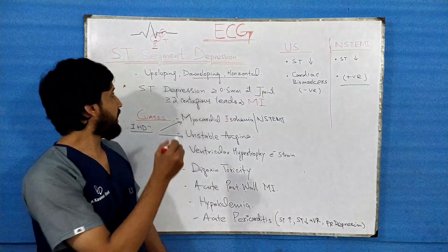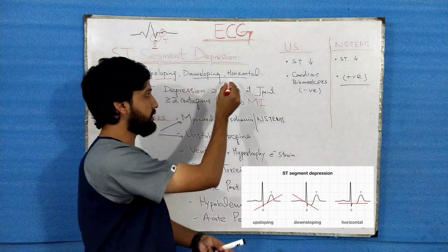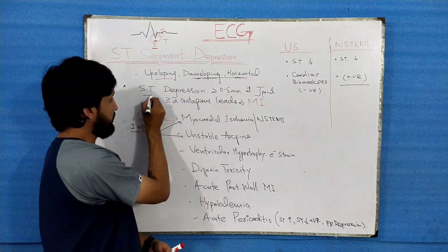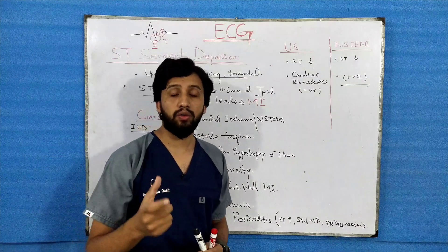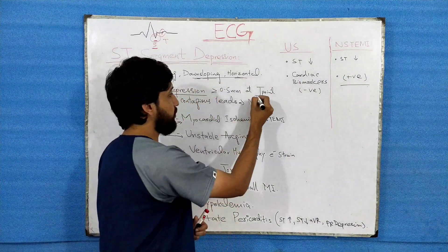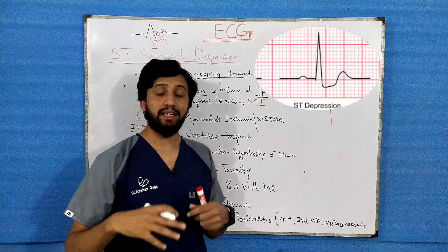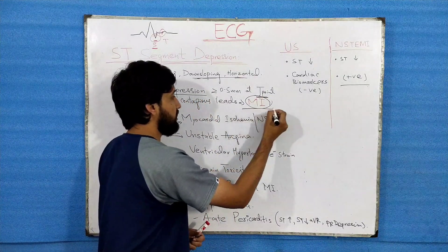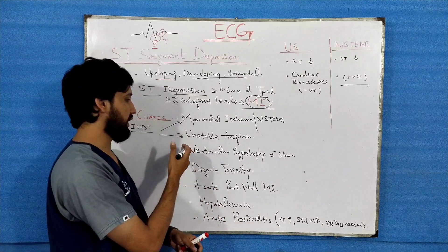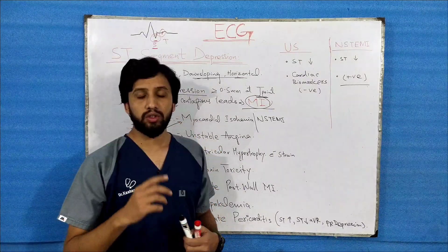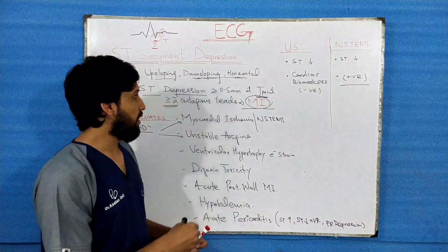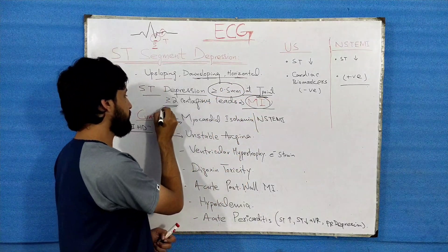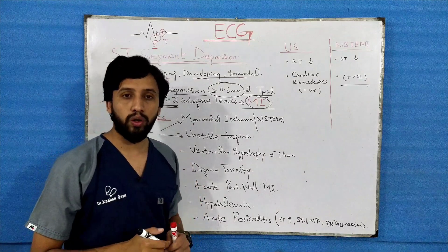Regarding its shape, the ST segment can be upsloping, downsloping, or horizontal. For downsloping and horizontal ST segments, ST segment depression is considered significant when it is greater than or equal to 0.5 mm at the J point. This is usually seen in two or more contiguous leads, and can indicate conditions like MI or unstable angina.